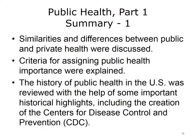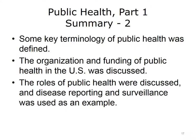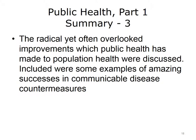This also concludes the unit Public Health Part 1. In summary, the similarities and differences between public and private health were discussed; criteria for assigning public health importance were explained; the history of public health in the U.S. was reviewed, including the creation of the Centers for Disease Control and Prevention; key terminology was defined; the organization and funding of public health was discussed; the roles of public health were discussed, including disease reporting and surveillance; and the radical yet often overlooked improvements which public health has made to population health were discussed, including successes in communicable disease countermeasures.